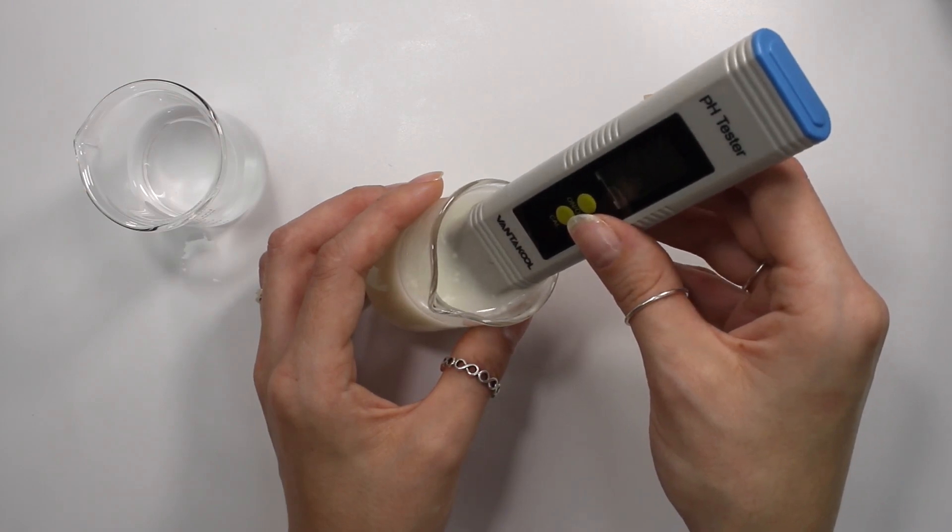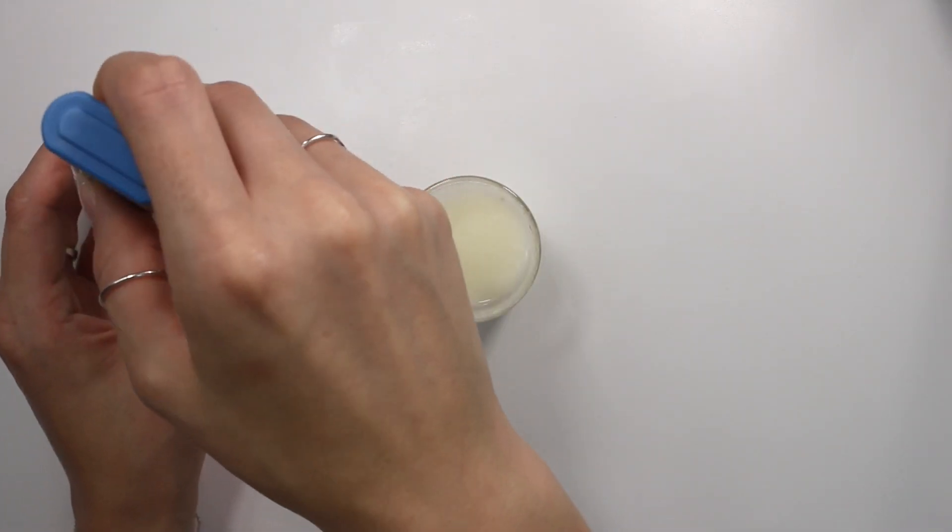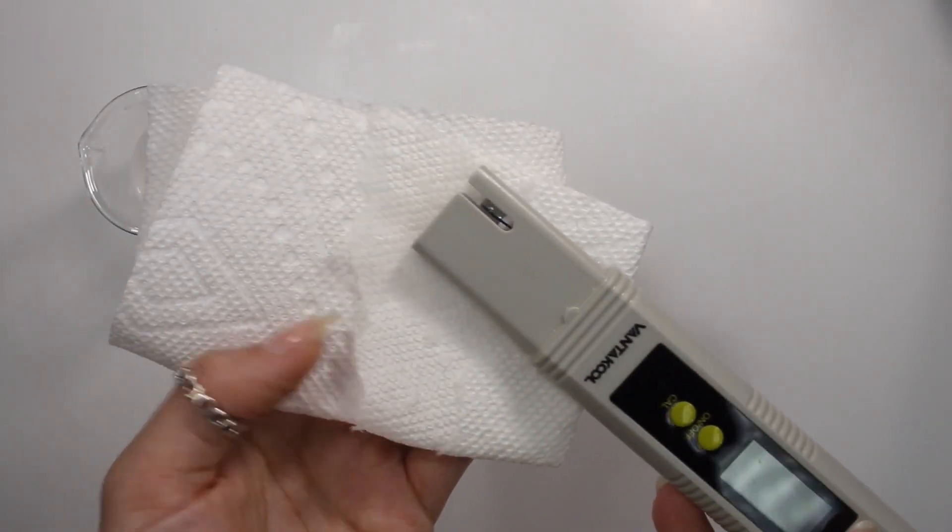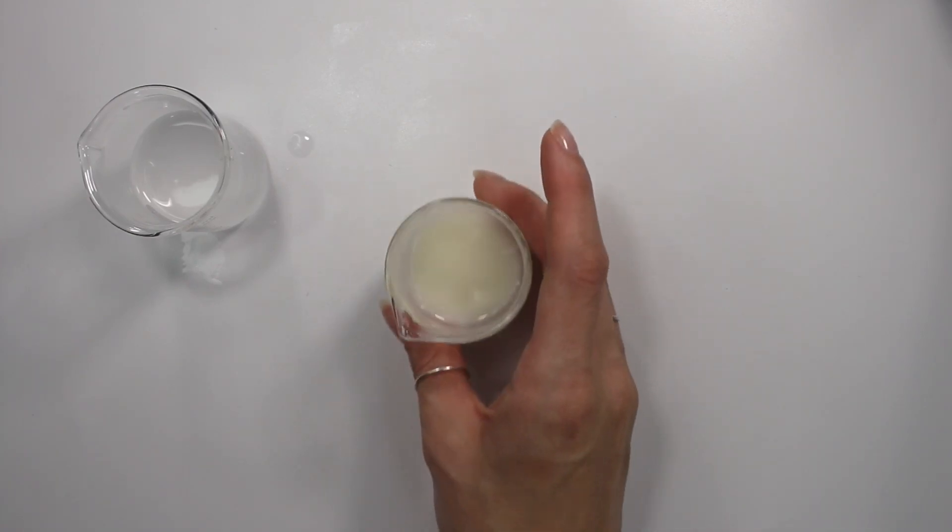But this pH meter is reading a pH of 5.08. So it's definitely reading a different pH. It's off by about 0.20, which isn't too much, but it's still a difference. So then you want to go ahead and rinse the pH meter in your distilled water again and then dry it off with paper towel.